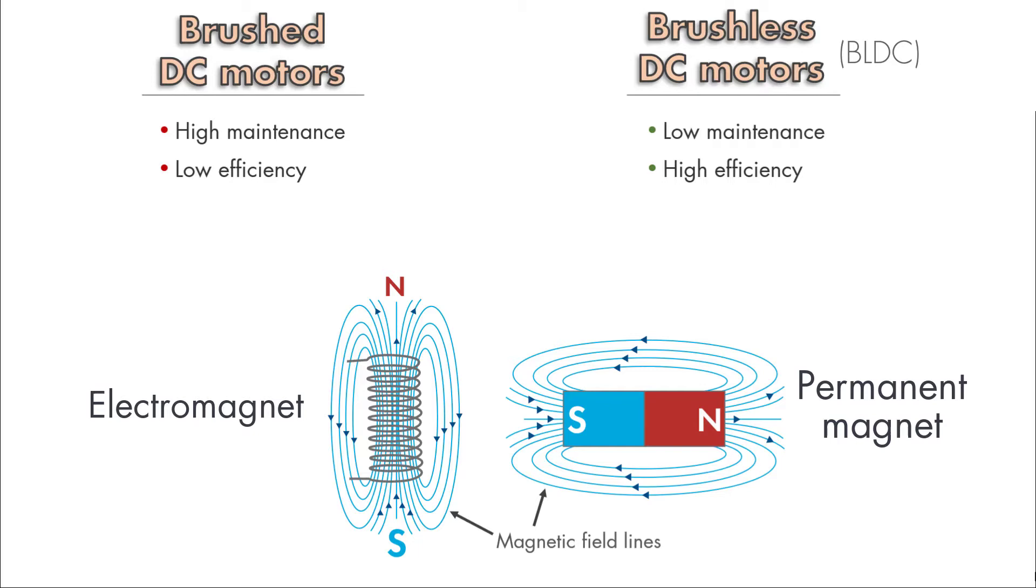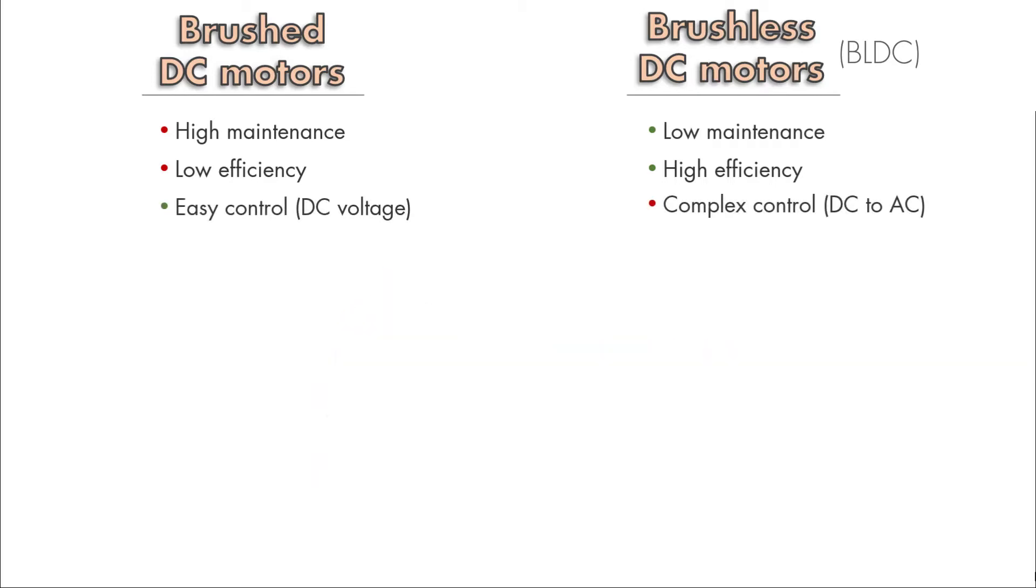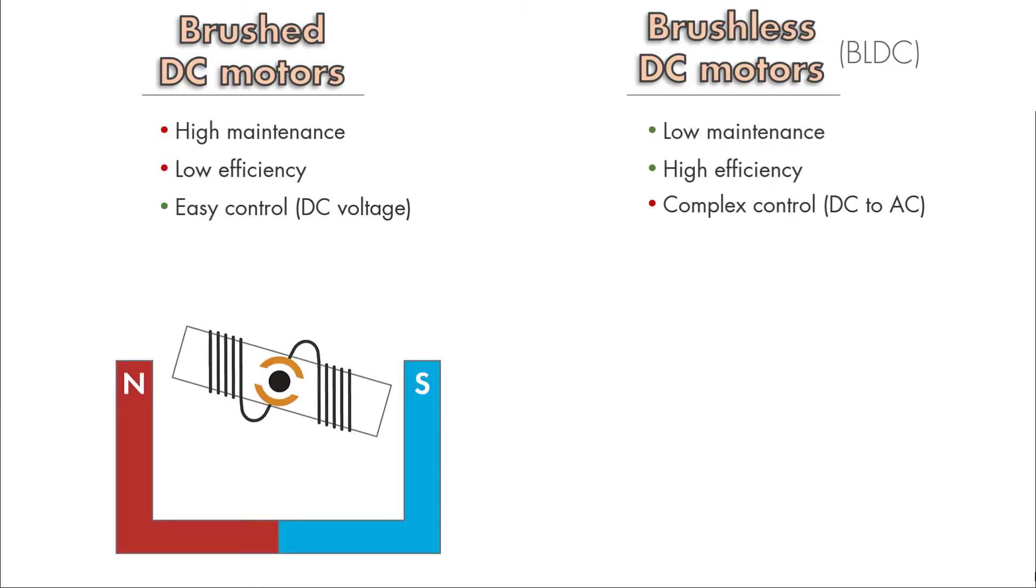BLDCs require a complex controller to convert DC power to three-phase voltages, whereas a brushed motor can be easily controlled by a DC voltage. Here, we'll show you a simplistic animation of a brushed DC motor.